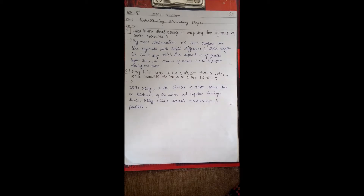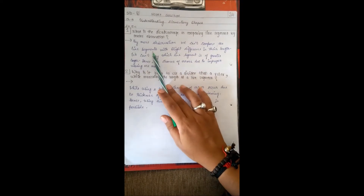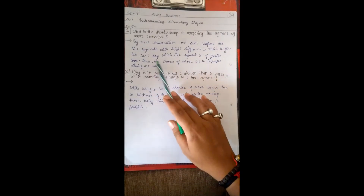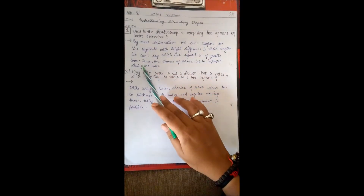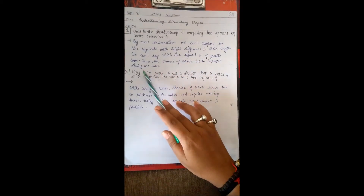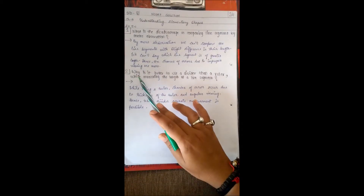Question 1 says: What is the disadvantage in comparing line segments by mere observation? By mere observation we cannot compare line segments with slight differences in their length — we cannot say which line segment is of greater length. Hence the chances of errors due to improper viewing are more.